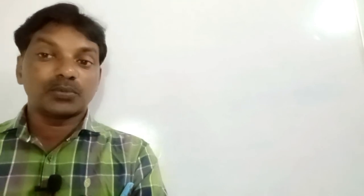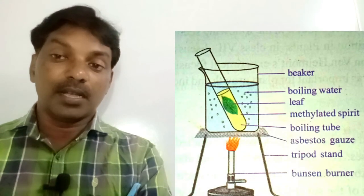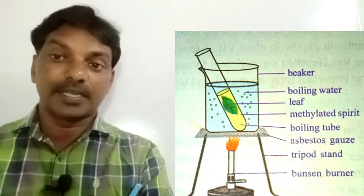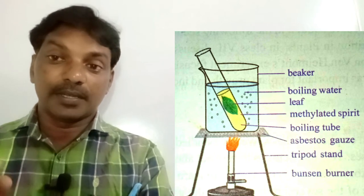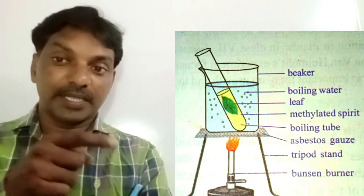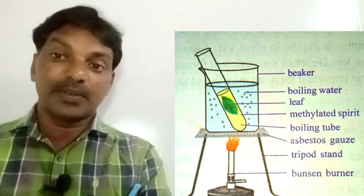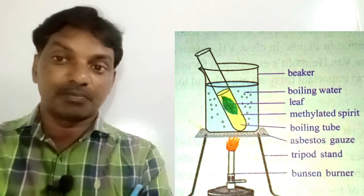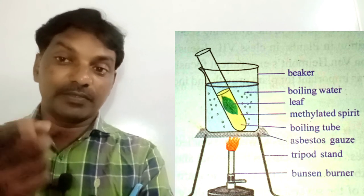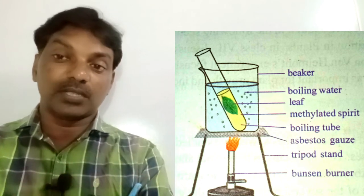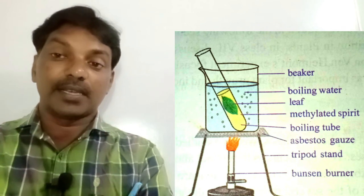After five hours, we cut the leaf that was under the light screen, and we can also take one more leaf for comparison. Take a beaker, pour some water in it, take a test tube, pour methylated spirit into the test tube, and insert both leaves into the test tube with the methylated spirit.